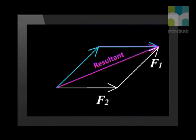Then we draw the diagonal of the parallelogram. This is again the resultant. It shows you the force that you get when the two forces F1 and F2 act together.